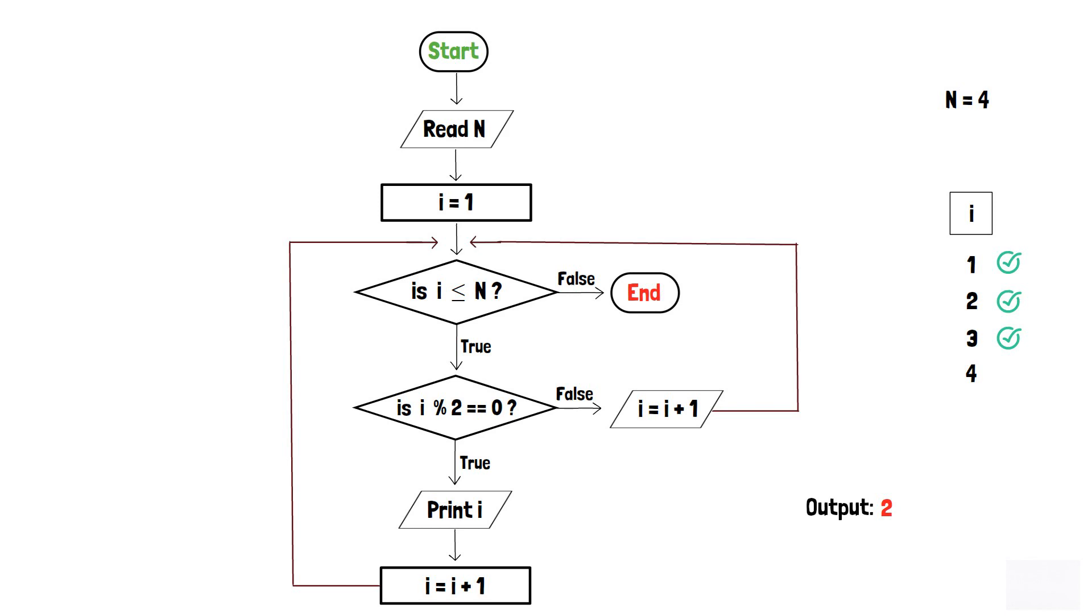Moreover, as i equals 4, the condition inside the first decision box is again true. That is, 4 is forwarded to the second decision box to check the evenness.